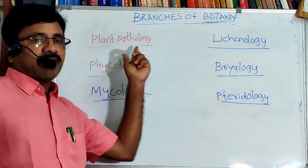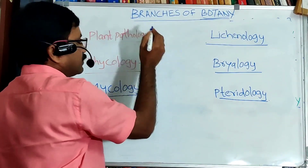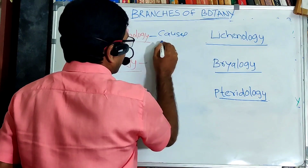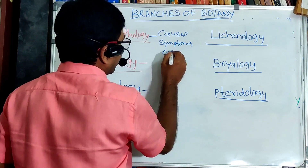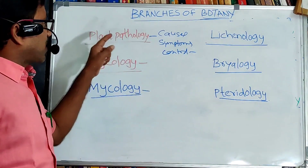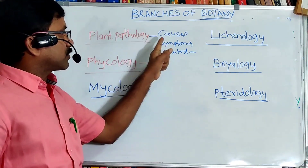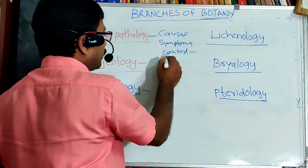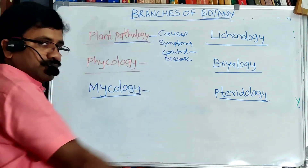Next, plant pathology. It deals with the study of causes, symptoms, and control of plant diseases. The branch of botany that deals with causes, symptoms, and control of plant diseases is known as plant pathology.